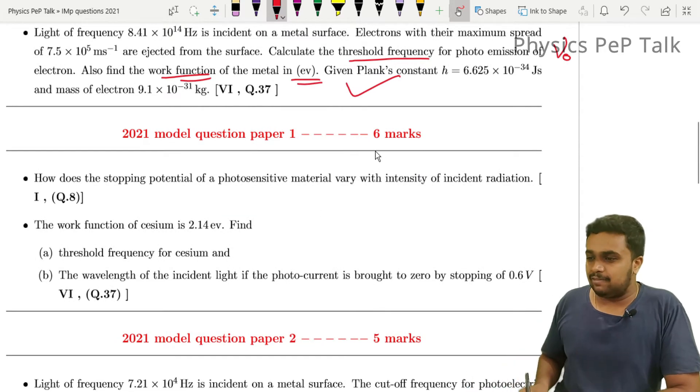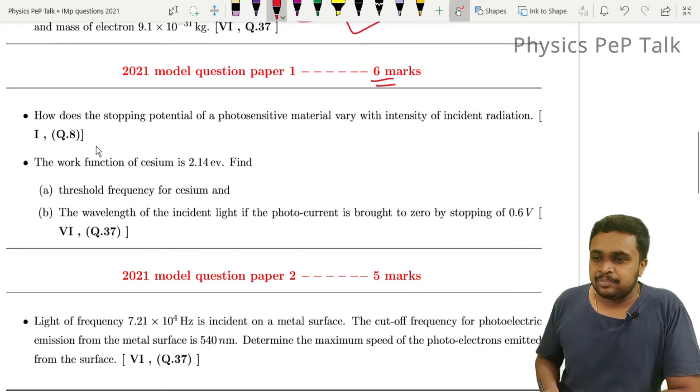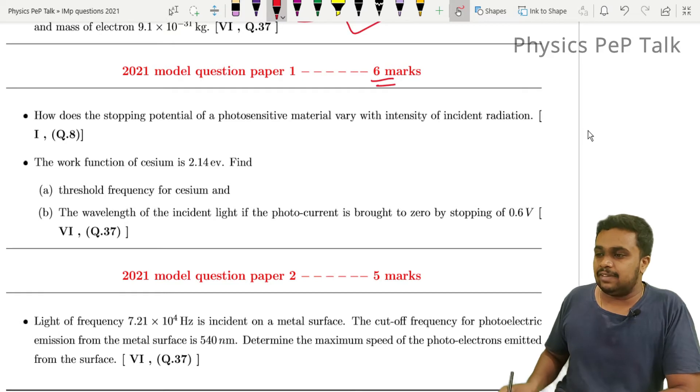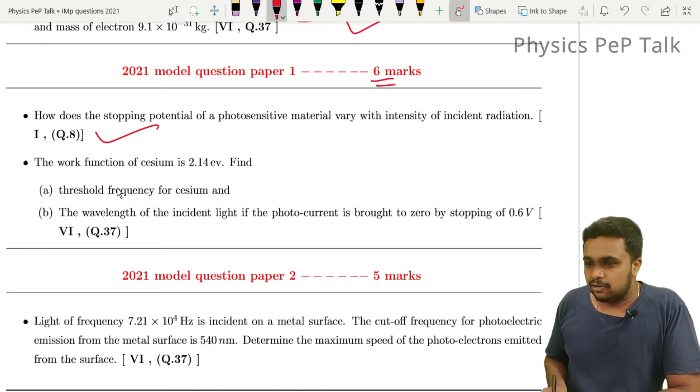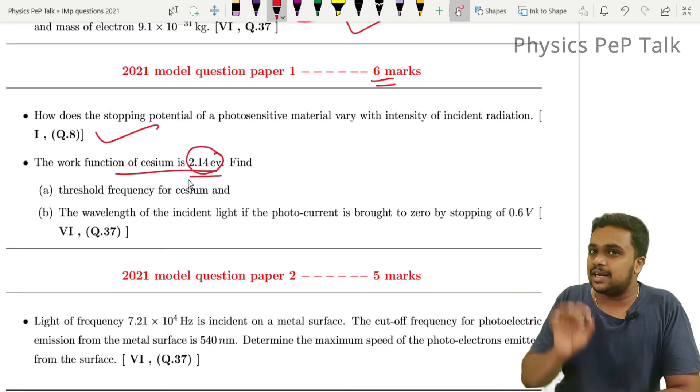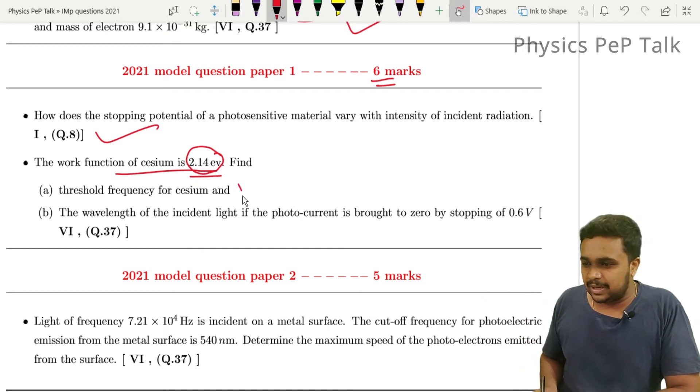2021 model paper 1. How does the stopping potential of a photosensitive material vary with intensity of incident radiation? One mark question. Work function of cesium is 2.14 electron volt. Electron volt is written in electron volt. First, you have to determine the threshold frequency nu zero. The wavelength of incident light if the photocurrent is brought to zero by stopping potential. Stopping potential is written in the wavelength of the light. It is very easy to solve the problem.